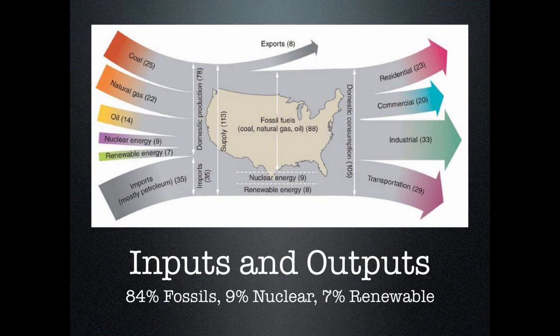For America specifically, our major sources of energy in order of importance are: oil first, coal second, and natural gas third. Our energy system has inputs and outputs. On the input side, coal is 25% of our energy and natural gas is 22%. Oil plus petroleum imports together total about 50% of our consumption. We also have some nuclear and renewable energy inputs.